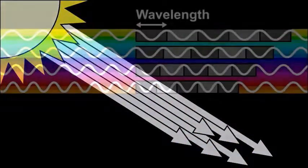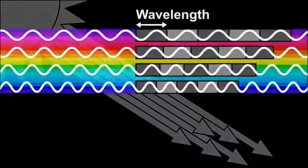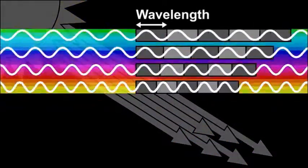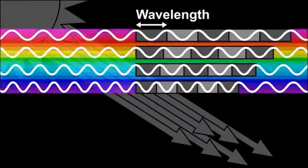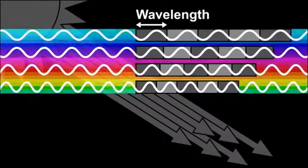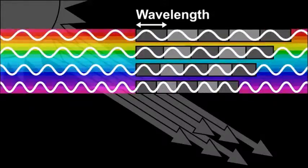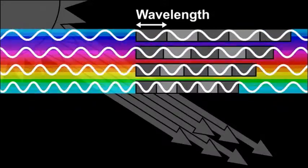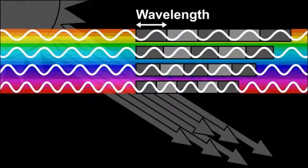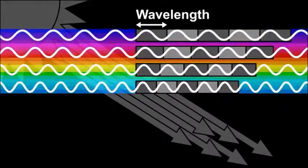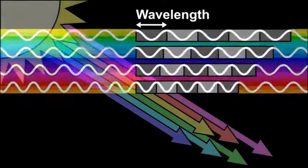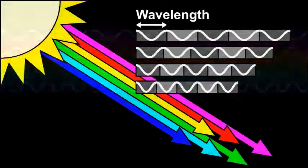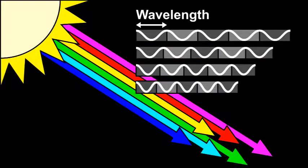Light moves through space in waves. The distance between the intervals of waves is called a wavelength. Different colors have different wavelengths.